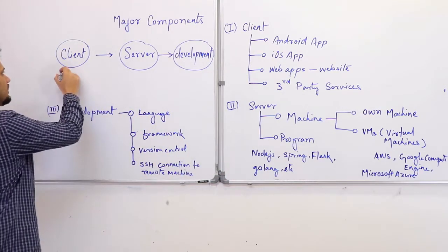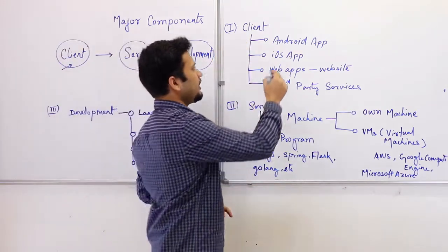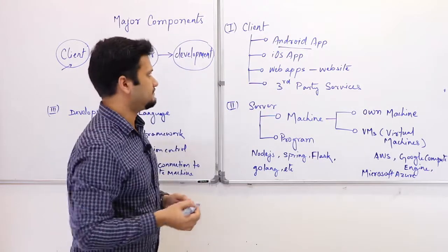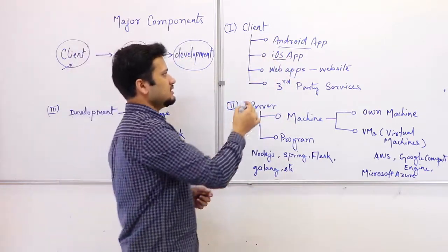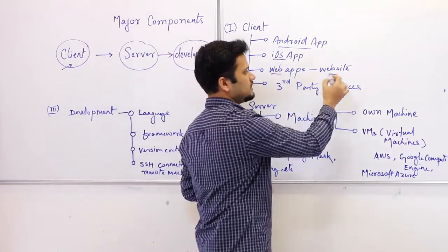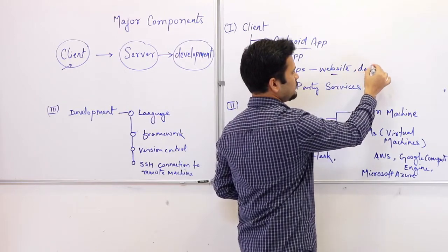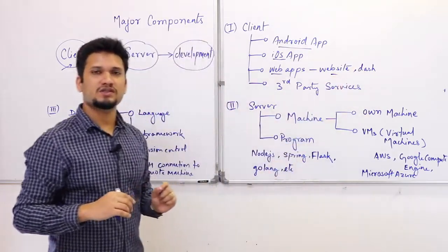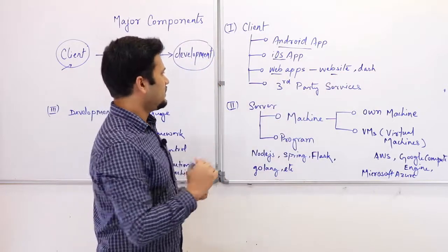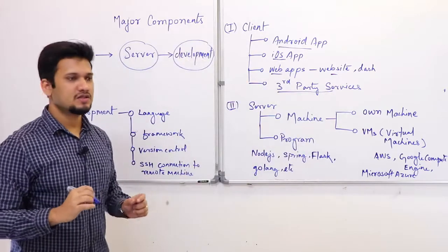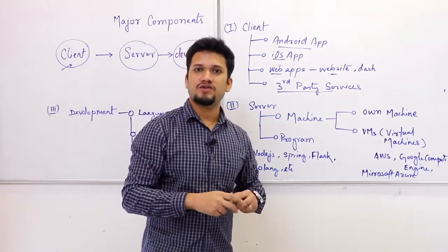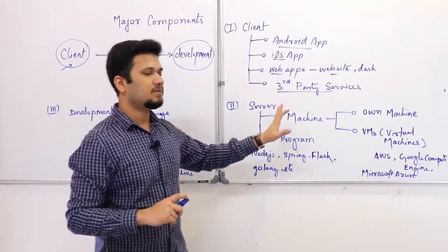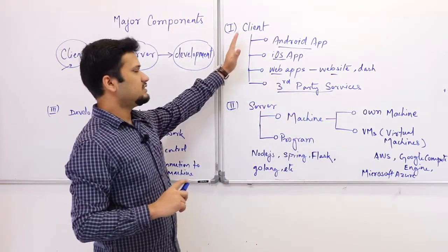First is client. Who are the clients? The client will be the Android app. I just gave you a demonstration of the Android app for Where is my Motivation. Similarly, you can have your iOS applications, you can have web apps like website, you can have the dashboard that you can use to pump up data into your backend system or you would want to administer something in the backend system. You can have the dashboard and you can also have the third party API services. For example, some other company wants to use your services, wants to access your resources. For that you will have to create APIs for those third party services.